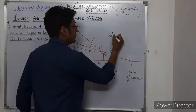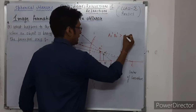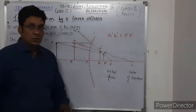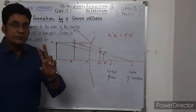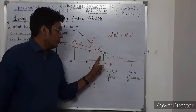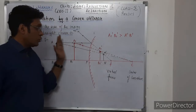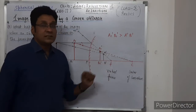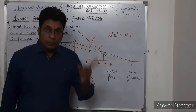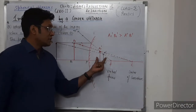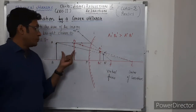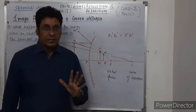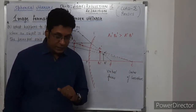So image formation takes place here. A1B1 is greater than AB. What do we observe from this? When the object is brought closer to the convex mirror, the size of the image becomes larger. However, in both cases, the image size remains less than the object size. The image is virtual and erect.